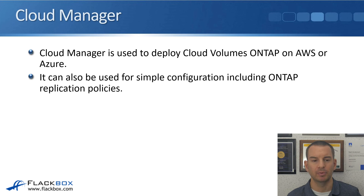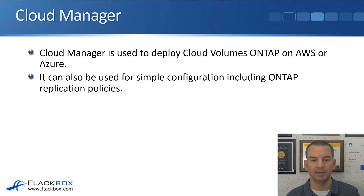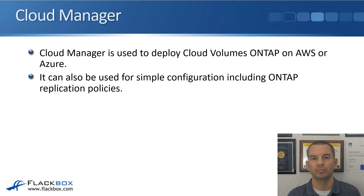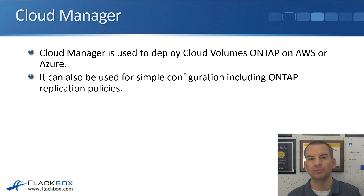The next management package is Cloud Manager, which is used for the initial deployment of Cloud Volumes ONTAP on AWS or Azure. After that initial deployment, it can also be used for simple configuration such as replication policies — for example, if you want to move data from the cloud to on-premises, you can configure those relationships in Cloud Manager. For main granular management of Cloud Volumes ONTAP, System Manager can be used.